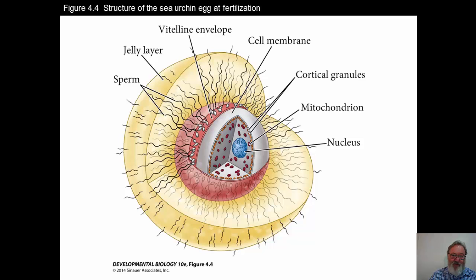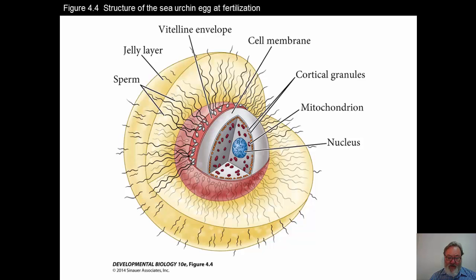The egg stores nutritive proteins that will keep the embryo going during the early phases of cell division. There are ribosomes and ribosomal RNA. Mitochondrial RNA will also be in the mitochondria, along with messenger RNA and transfer RNA. These RNAs are activated at fertilization to synthesize the needed proteins for development. There are also morphogenetic factors — transcription factors and paracrine factors that will direct early development.